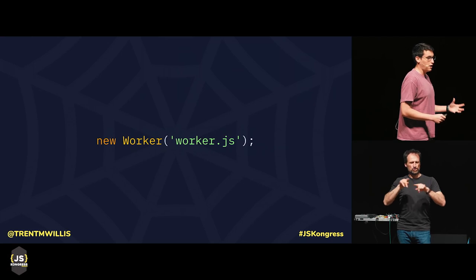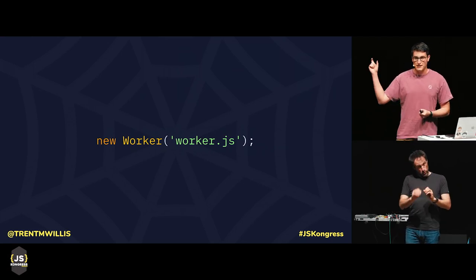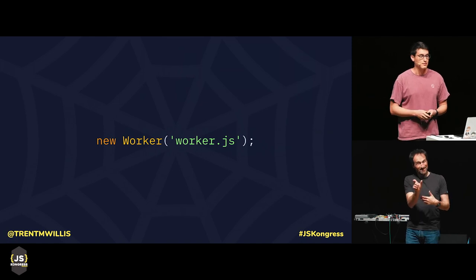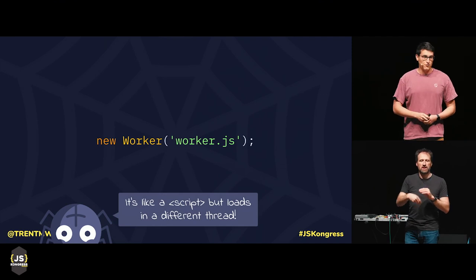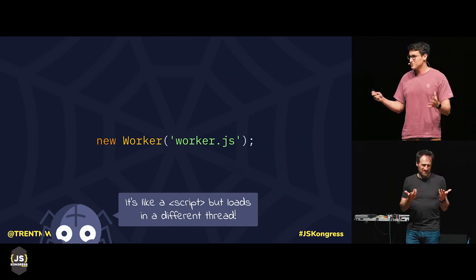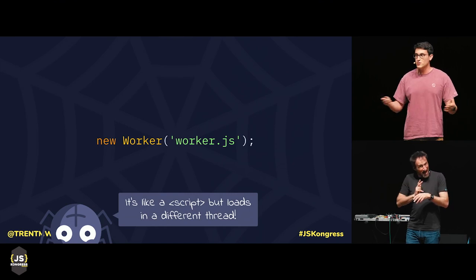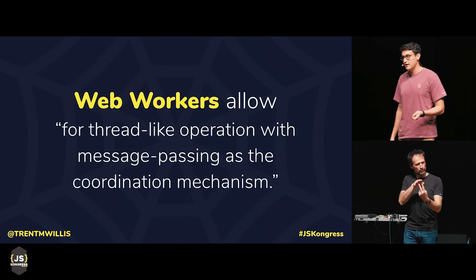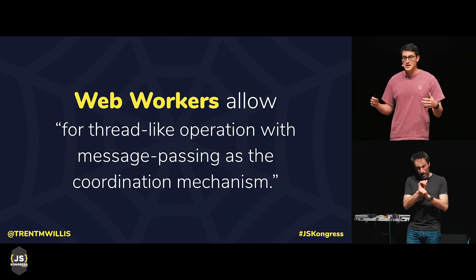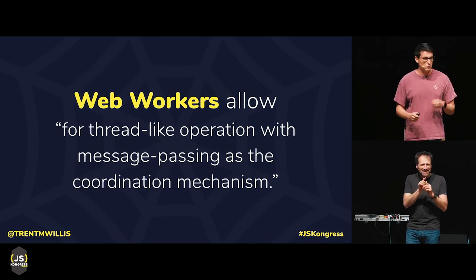When you load up a worker like this, it loads that script at that file path into a new thread. You can think of them as kind of like script tags, except instead of loading another JavaScript file into the browser's main thread, it's loading it into a new thread. This is all you need to do to run some JavaScript in a Web Worker. But that's not very helpful, because your user's experience is running in the main thread — so you need some way to communicate between the two. The spec allows for workers to communicate with the browser's main thread through a message-passing mechanism, which are basically just like events.